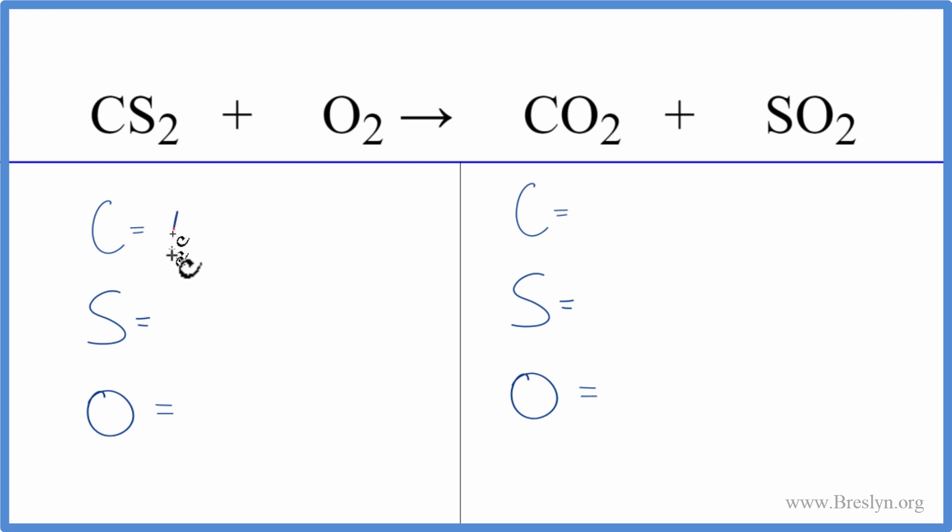We have one carbon, two sulfur atoms, and two oxygen atoms. On the product side, we have one carbon, one sulfur, and two oxygens. Plus, don't forget these two here with the SO2, so we have four oxygen atoms.